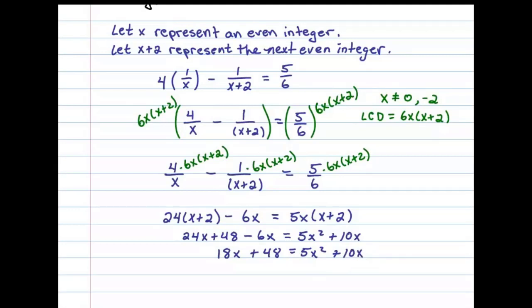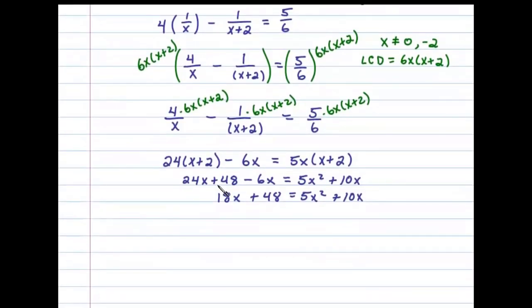Subtracting 18x on both sides and subtracting 48 on both sides leaves us with 0 = 5x² - 8x - 48.